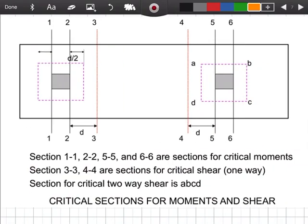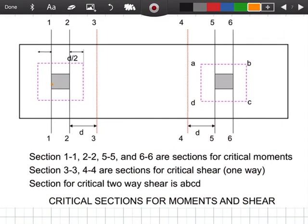For the critical sections for moment and shear - for moment, our critical section is at the face of the column, section 1-1 and section 2-2. At the face of the column, section 5-5 and section 6-6. For one-way shear, section 3 and section 4, d-distance from the face of the column. And for critical two-way shear is A, B, C, D - d over 2 distance from the face of the column on all sides.